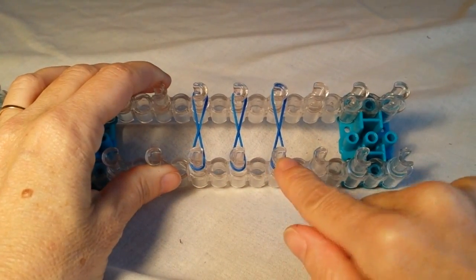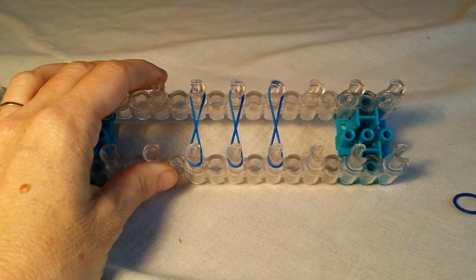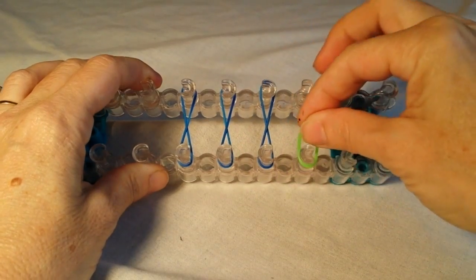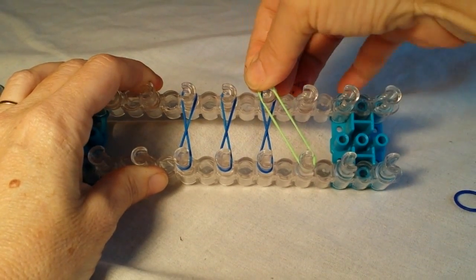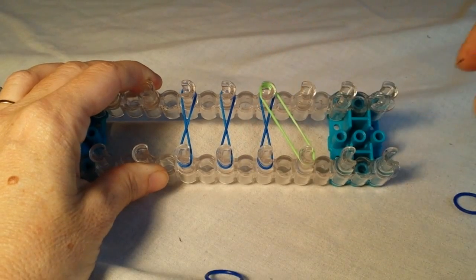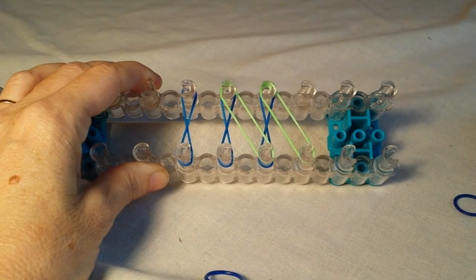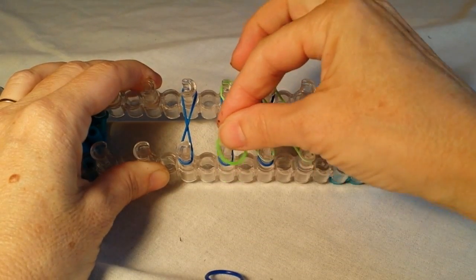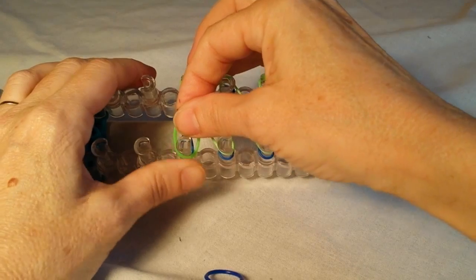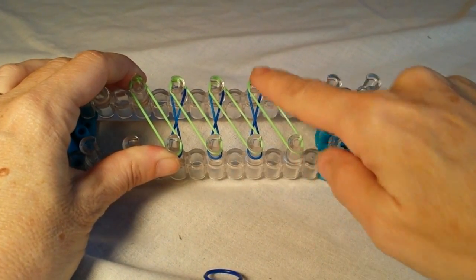I'm only making it three pegs, three sets of pegs. So your next row is going to be diagonal, and if you were doing the whole loom, this is why you didn't start the first row all the way out here.